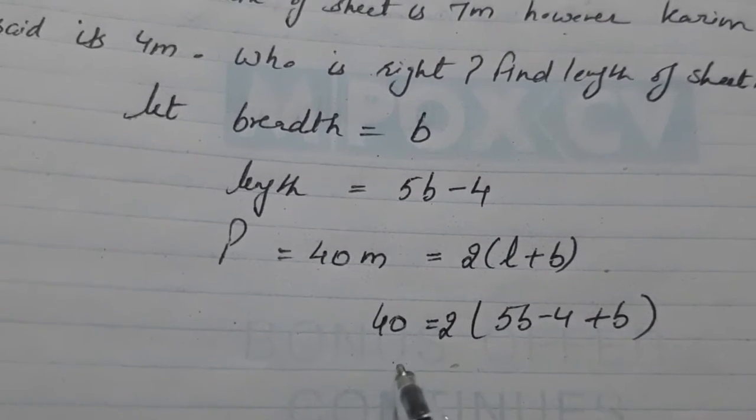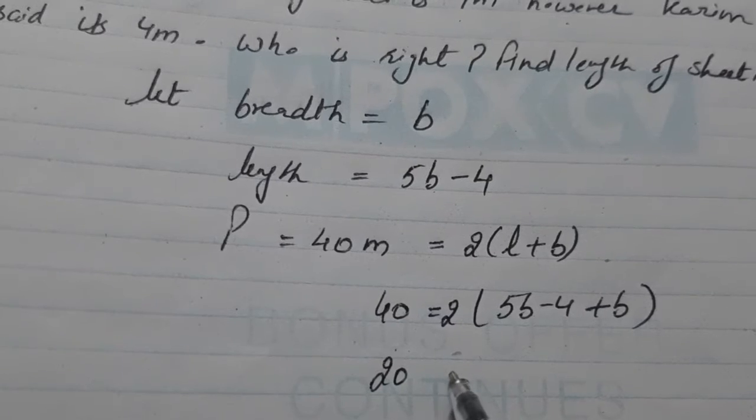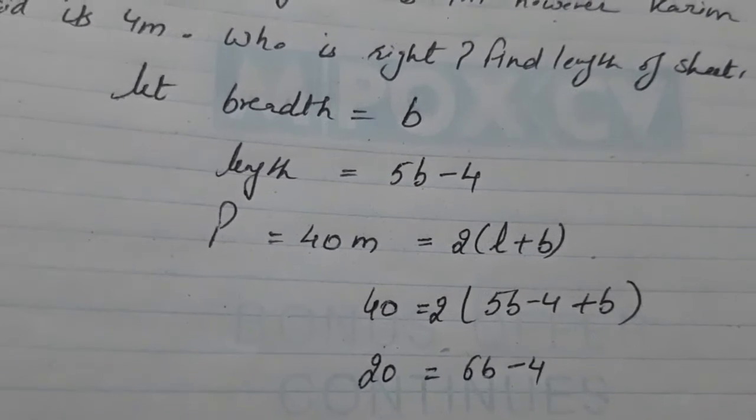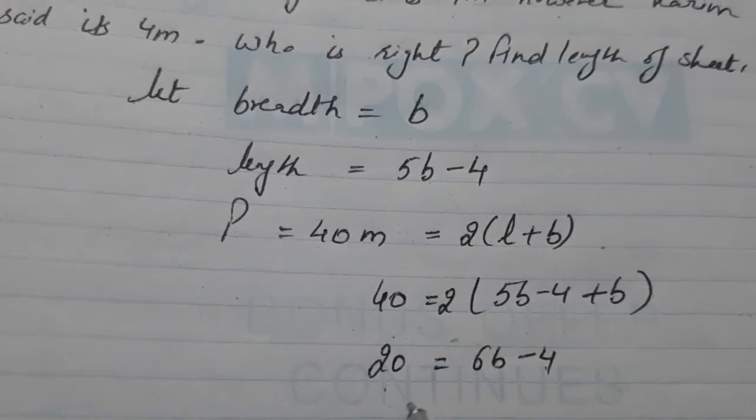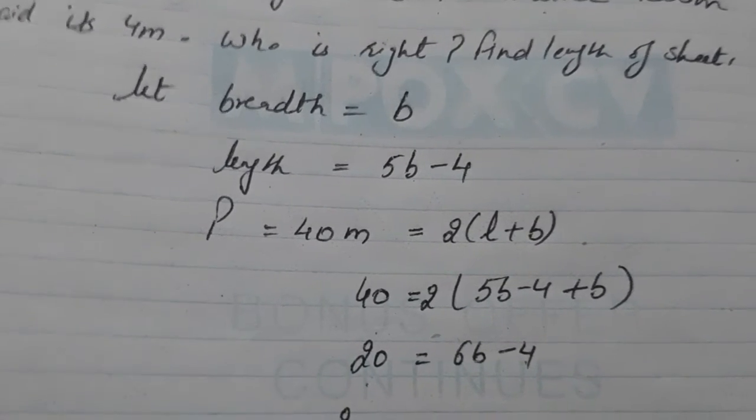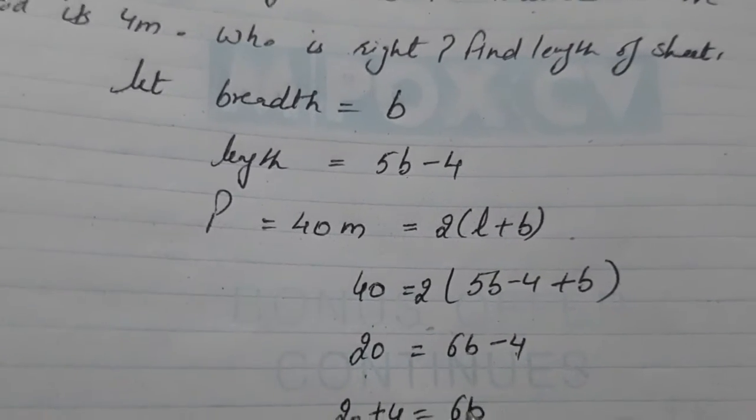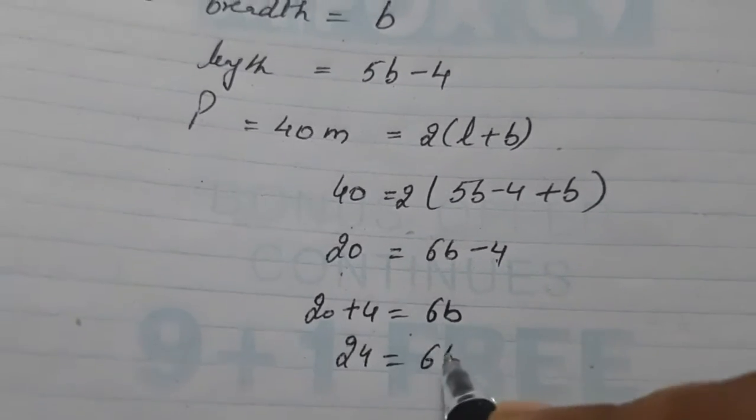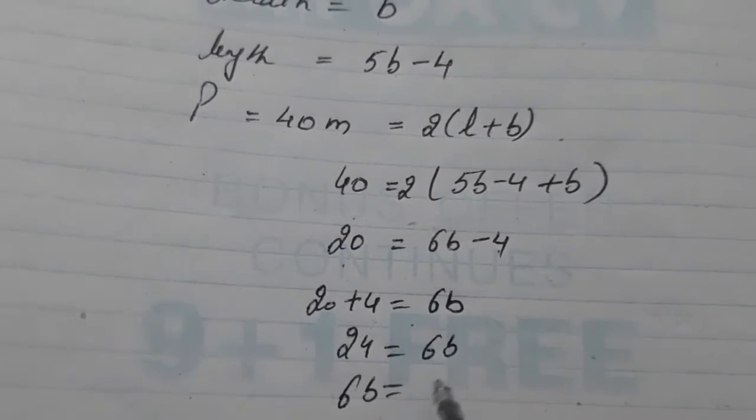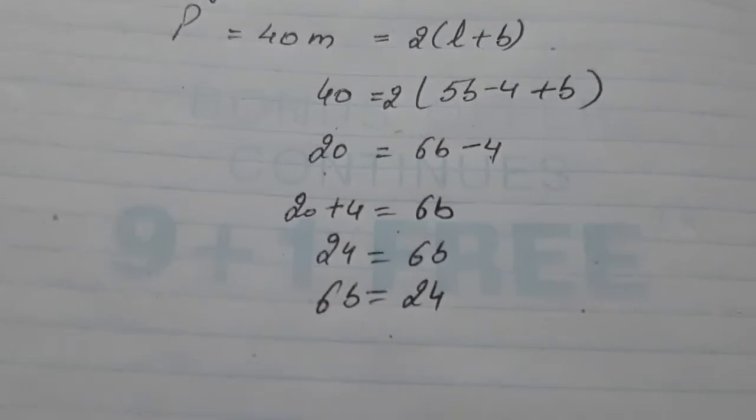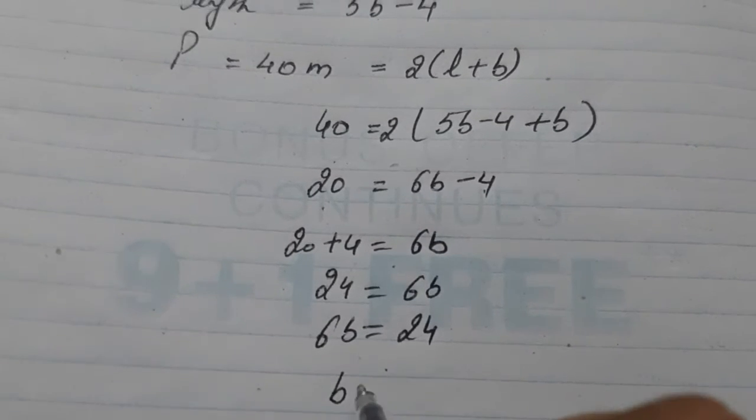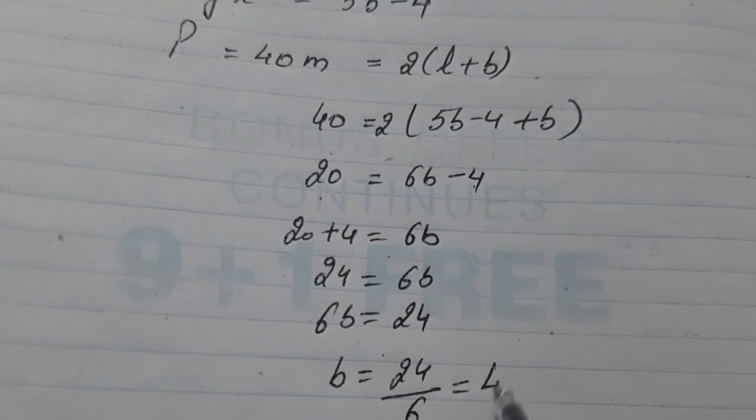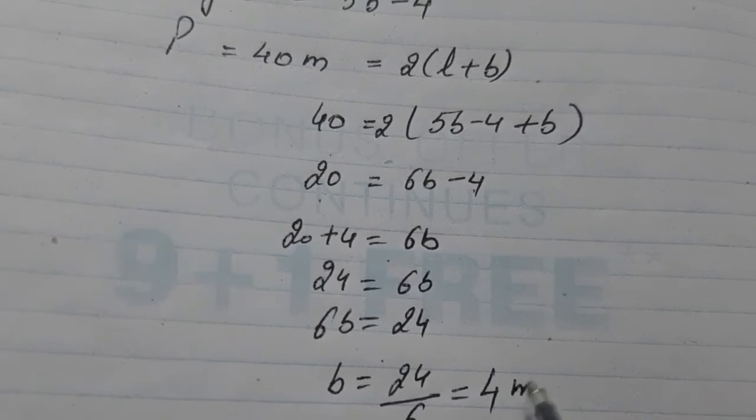We will divide this side by 2. It will become 20. 5B plus B that is 6B minus 4. Now, minus 4 will be transposed to this side. It will become 20 plus 4 is equal to 6B or 24 is equal to 6B or 6B is equal to 24. Now, divide both sides by 6. So, we get 24 by 6 that is 4 meters.